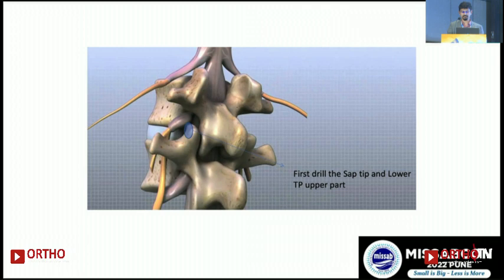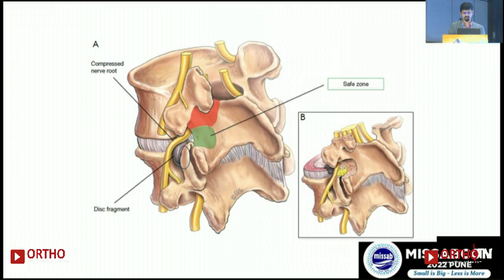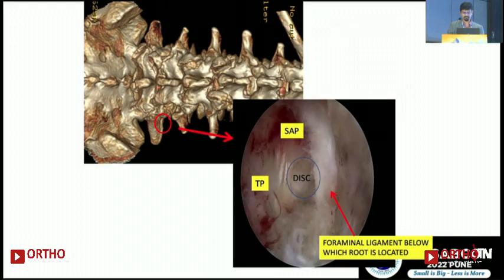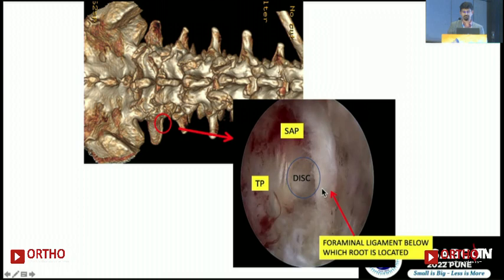For the paraspinal technique, both portals are docked on the SAP within the safe zone. This is an extra-foraminal disc herniation — the endoscopic view shows the transverse process, and the SAP is drilled. One important point: there is a foraminal ligament above the root that must be removed, and since the DRG ganglion is present, using an RF hook is much safer and more comfortable for dissecting this foraminal ligament.